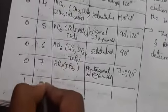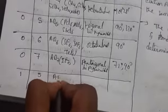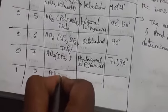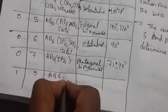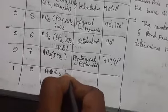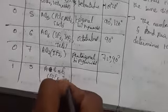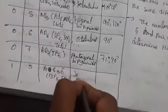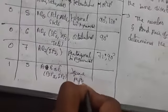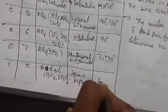With one lone pair and five bond pairs, the molecule type is AB5E and the shape is square pyramidal. Examples include BrF5 and IF5. The bond angle is 90°.